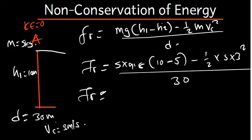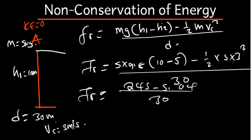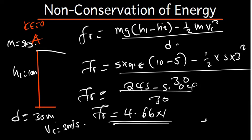So we have 5 times 9.8 times 5, which is 245, minus 0.5 times 5 times 9, which is 22.5. That gives 245 minus 22.5 equals 222.5, divided by 30. So the friction force is approximately 4.66 Newtons. As simple as that.